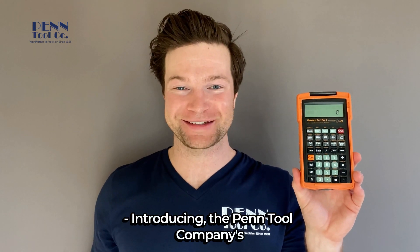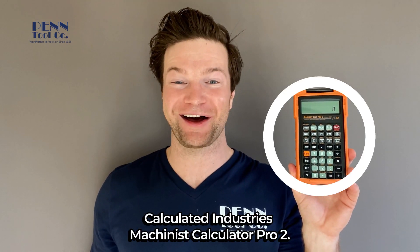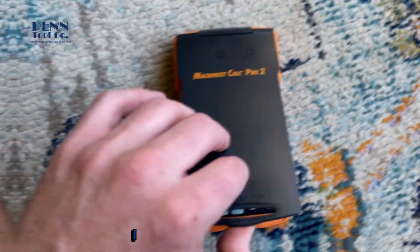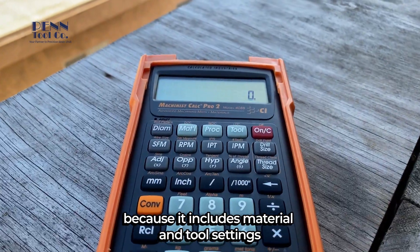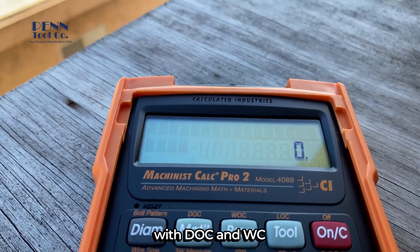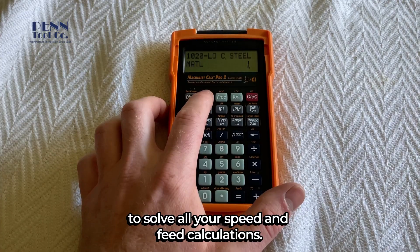Introducing the Penn Tool Company's Calculated Industries Machinist Calculator Pro 2. I decided to give this a go because it includes material and tool settings with DOC and WC to solve all your speed and feed calculations.